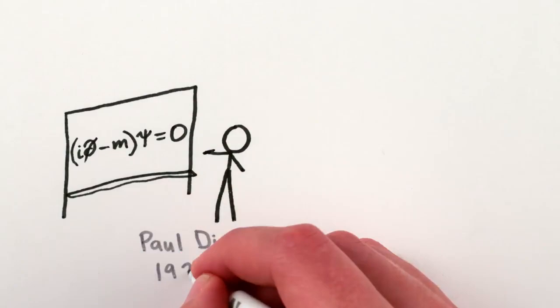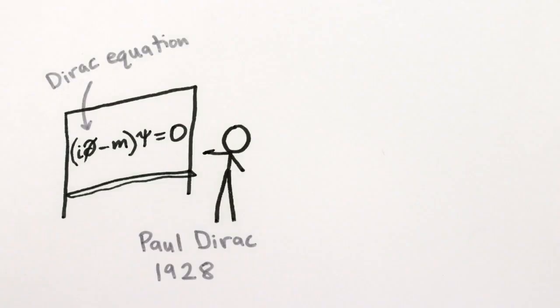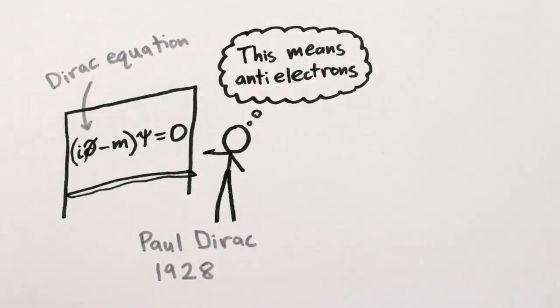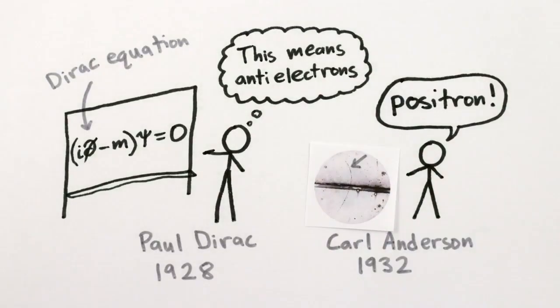In fact, mathematics has always been closely tied to antimatter. The mathematics of relativistic quantum mechanics predicted the existence of antimatter for years before any had ever been discovered.